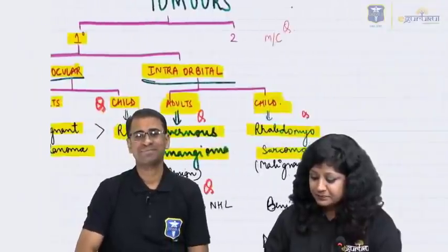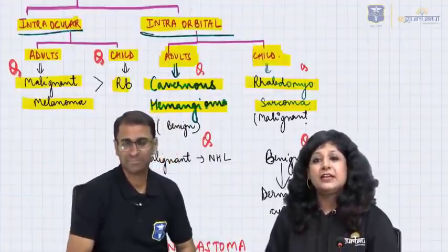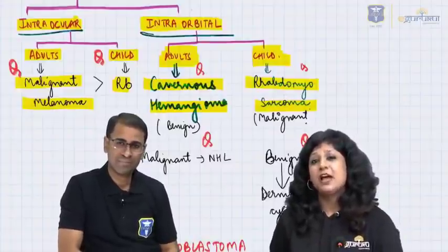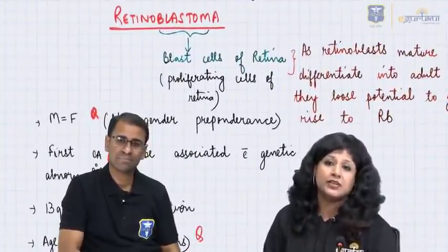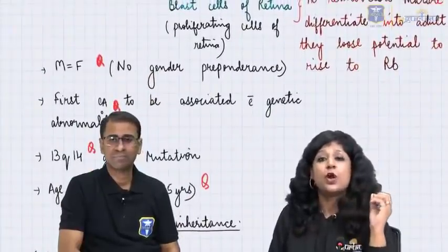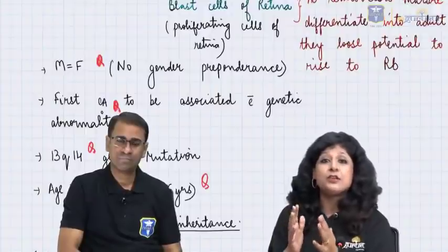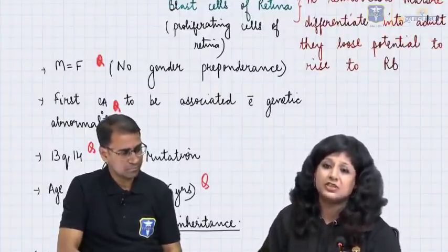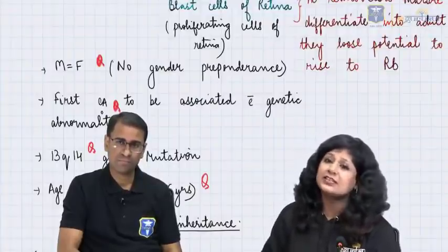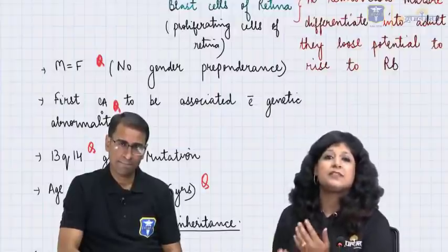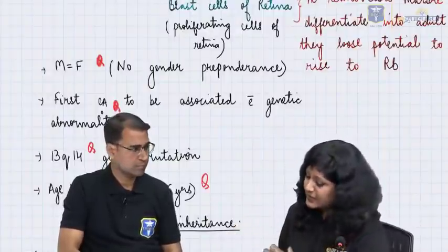Retinoblastoma is the most common primary intraocular malignant tumor, and it is very commonly seen in children. We'll be talking about pathological as well as clinical aspects of retinoblastoma. This tumor is more commonly found in small children, there is no gender preponderance, and it was the first carcinoma known to be associated with genetic abnormality. The most common age of diagnosis is less than three years — typically a one-and-a-half-year-old child is the usual presentation.